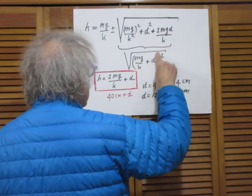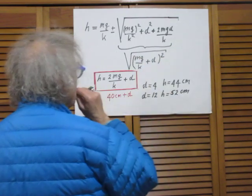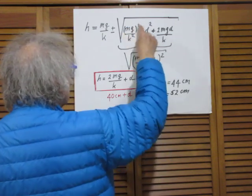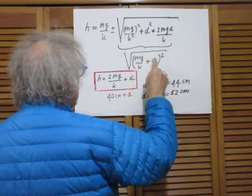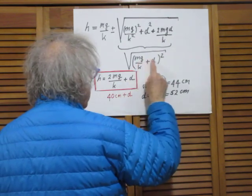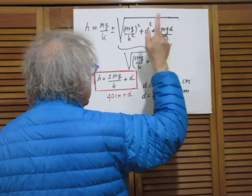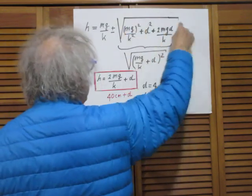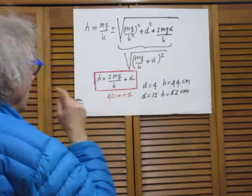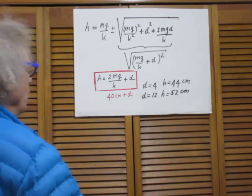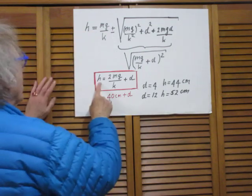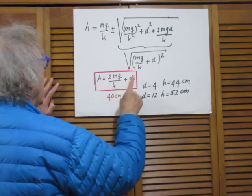Now look at what is under here: this part is mg divided by k, plus d squared. The mg divided by k squared is here, d squared is here, and then you have twice the product of these two, which is 2mg divided by k. So what you have here is a perfect square. After removing the square root and the factor of 2, you get mg over k, so small h equals 2mg over k plus d.